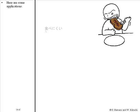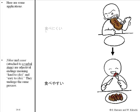Here are some applications. 憎い and 安い, attached to a verbal stem, are adjectival endings meaning 'hard to do' and 'easy to do.' They undergo the same process. For example: 食べやすくなりました.